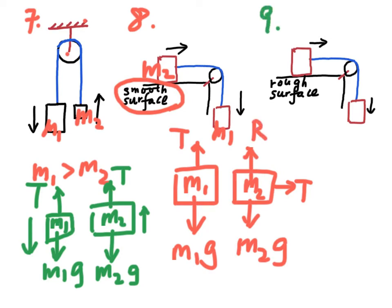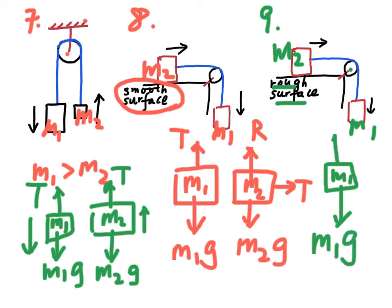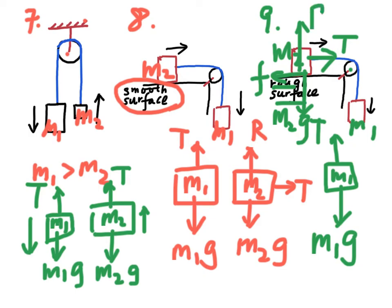In case nine, two blocks M1 and M2 are connected by a string passing over a smooth pulley. The force acting on M1 is M1·g and the tension of the string T. The force on M2 is the tension of the string, frictional force, its weight M2·g, and the reaction force R.